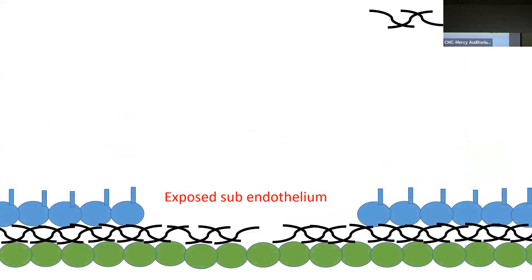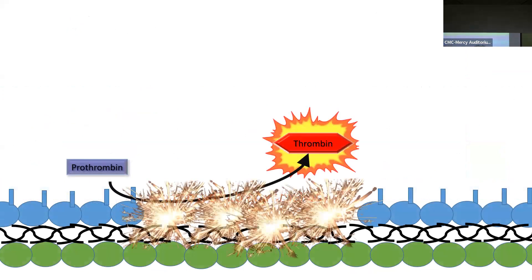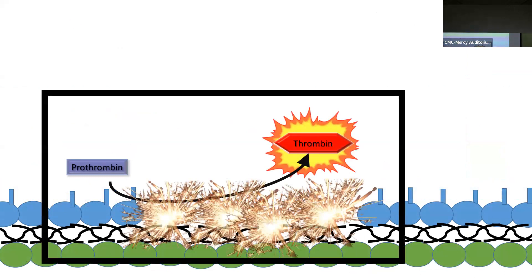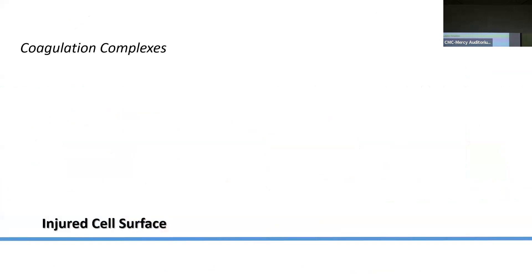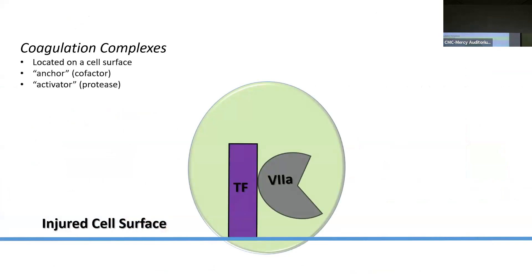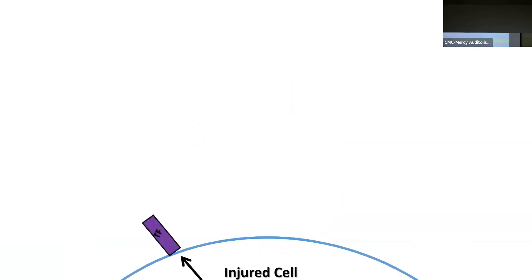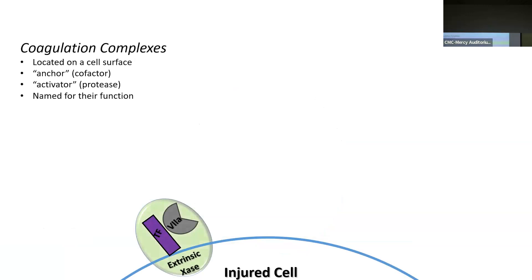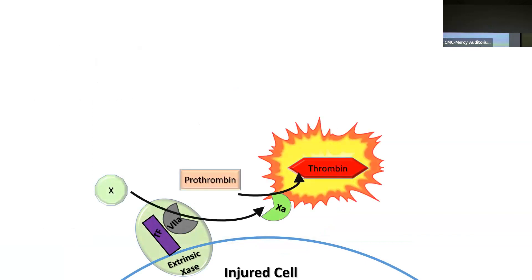Diving down into the area of exposed subendothelium where we had our spark: on the injured cell surface there are four main elements of the coagulation engine — an anchoring cofactor, an activating protease, and its ultimate function. The extrinsic tenase is meant to make activated factor 10. When a cell is injured, it expresses tissue factor on its surface, which serves as the coagulation complex anchor, grabs factor 7, and creates the extrinsic tenase — the spark that converts prothrombin into thrombin.